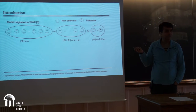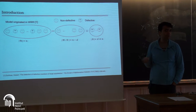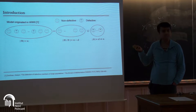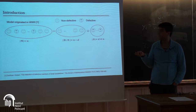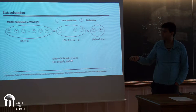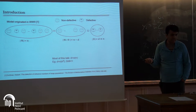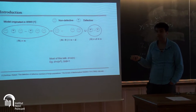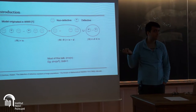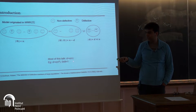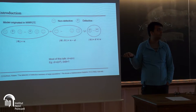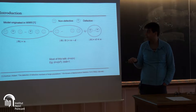There's a large number of non-defective people, and you want to identify the defective ones. In much of this talk, I'll be interested in the regime where d is little-o of n — it's significantly smaller than n. For example, think of d being like some constant times n to the theta, where theta is between 0 and 1.